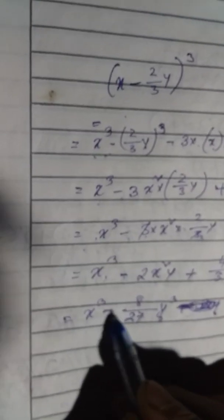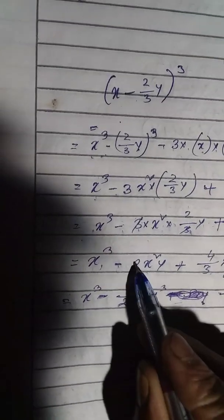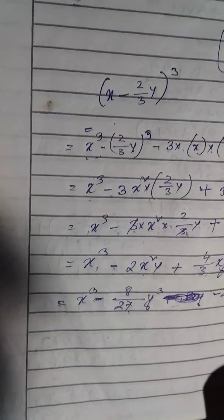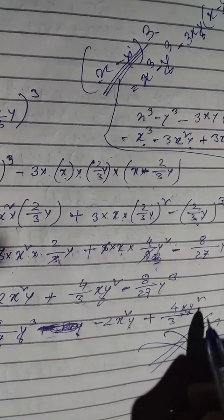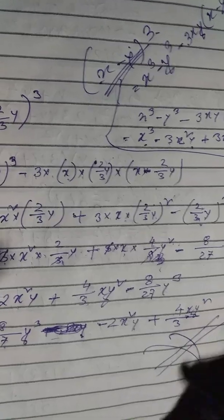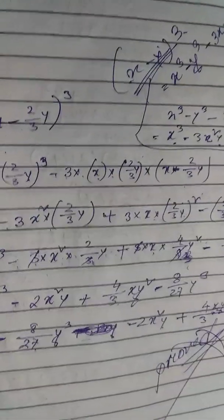Next step. X cube minus 8 Y cube divided by 27 minus 2X square Y plus 4XY square by 3. Okay? Solution proved it. Proved. I will wait. My eyes open. Go ahead.